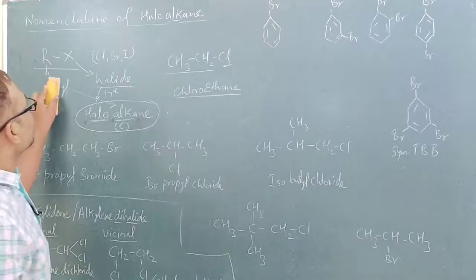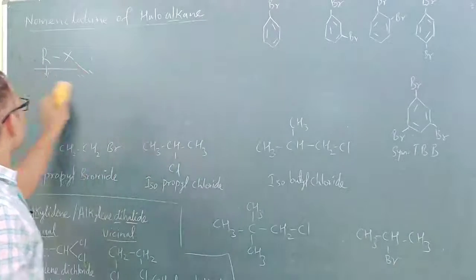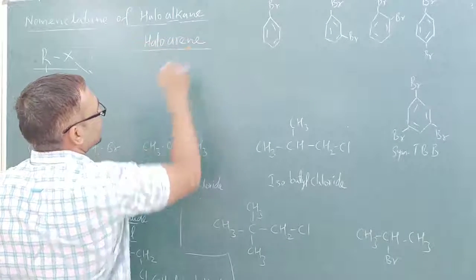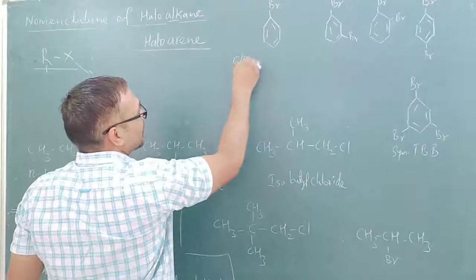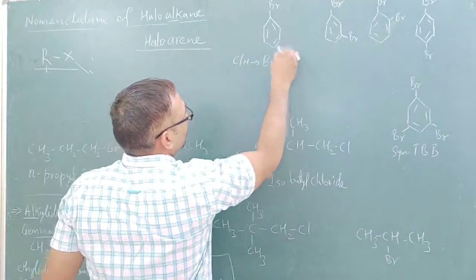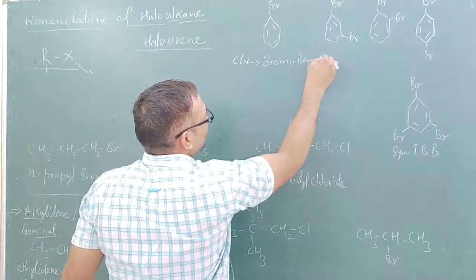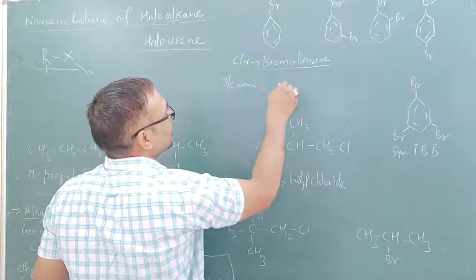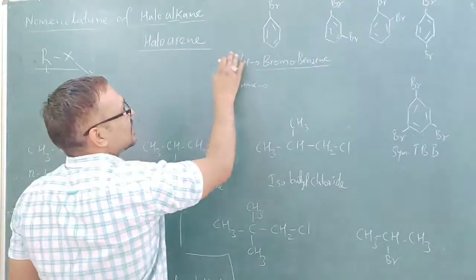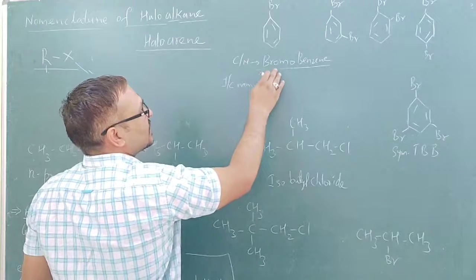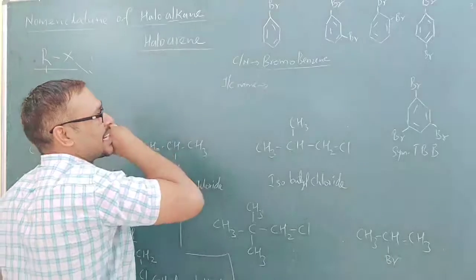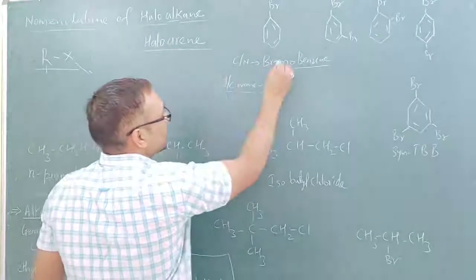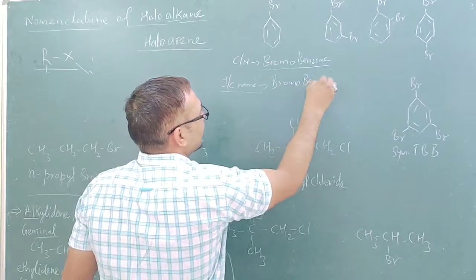Now let's see the nomenclature of aromatic compounds — halo-arenes. How do we name aromatic compounds? The similar term is used: halo-arenes. Say for example, what is the common name of bromobenzene? The ring is benzene, so common name is bromobenzene. For the IUPAC name of halo-arenes, the IUPAC name is the same as the common name — bromobenzene. We do not say benzene bromide.